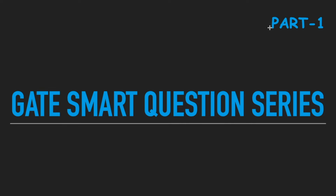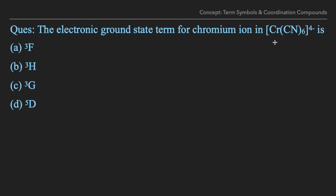This is Part 1, and this video covers a question from the GATE 2017 exam — a very good question because if you try to do it in the usual method you will end up doing it wrong. The question is: what is the electronic ground state term for the chromium ion in Cr(CN)₆⁴⁻? The concepts involved are term symbols and coordination chemistry. The options given are 3F, 3H, 3G, and 5D.